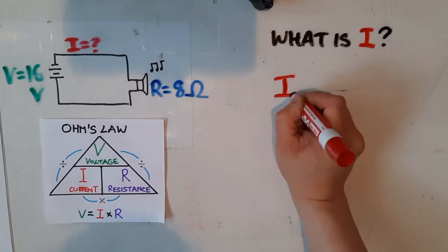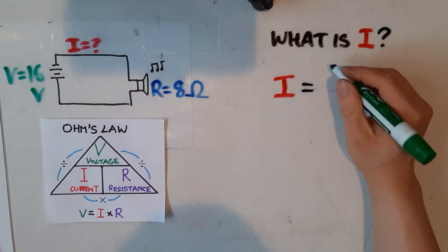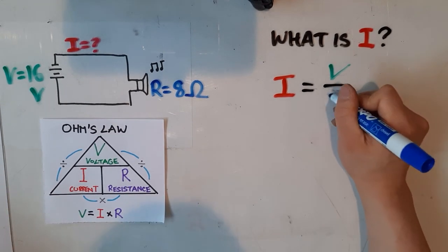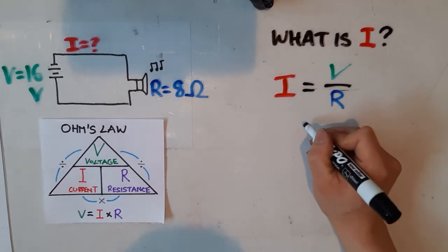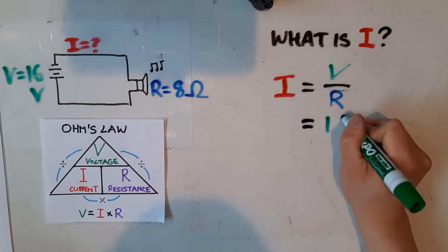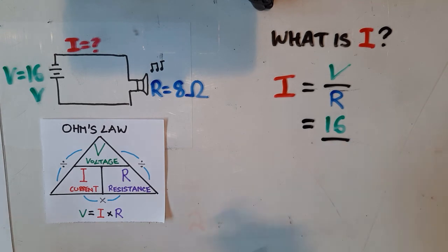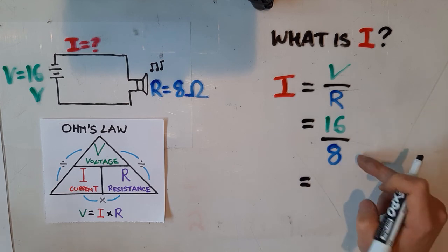To solve for current, or I, it is the voltage, in this case, of the battery, divided by the resistance, in this case, offered by the speaker. And now I'm going to plug in my numbers. So I know that the voltage is 16 volts, so I'm going to put 16 on the top. And that's divided by 8 ohms. If I divide 16 by 8, that produces 2.